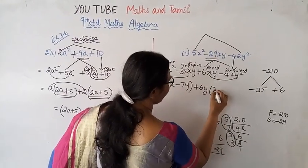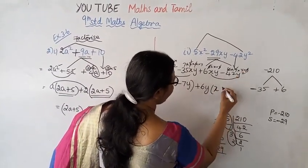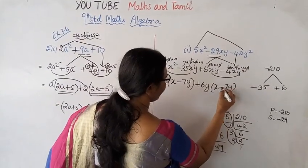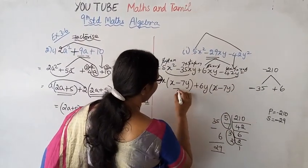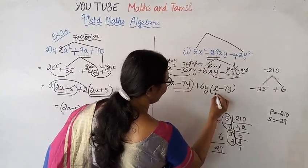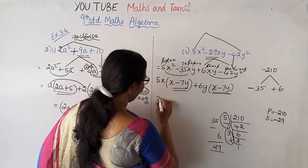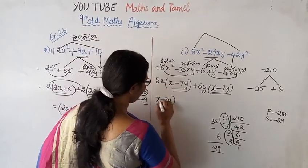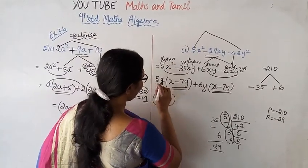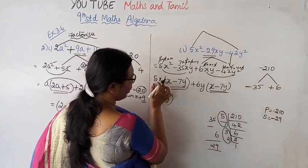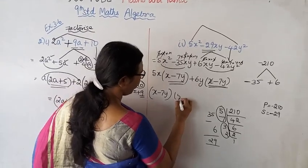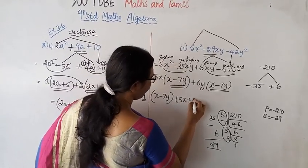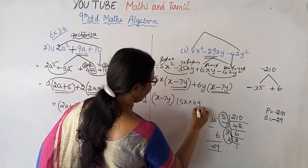Once we group and take common factors: from the first group, x minus 7y; from the second group, x minus 7y again. The final factorized form becomes 5x plus 6y into x minus 7y.